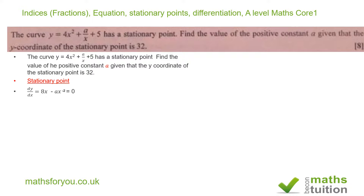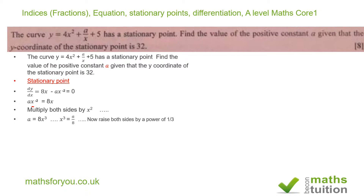At the stationary point, 8x minus ax⁻² equals zero, so ax⁻² = 8x. To get rid of x, we multiply both sides by x², giving a = 8x³. Dividing both sides by 8, we get x³ = a/8. Taking the cube root of both sides — raising to the power of one third — gives x = (a/8)^(1/3).